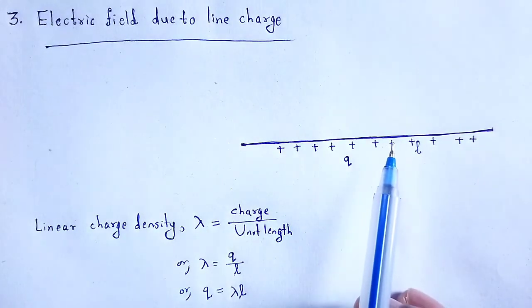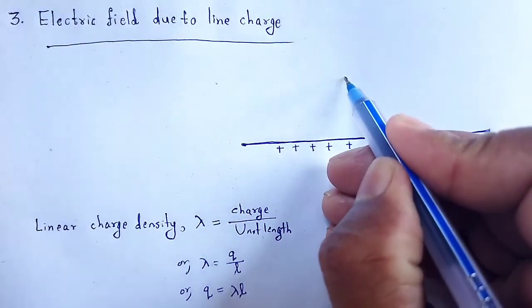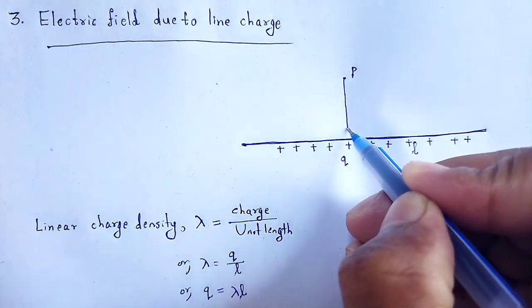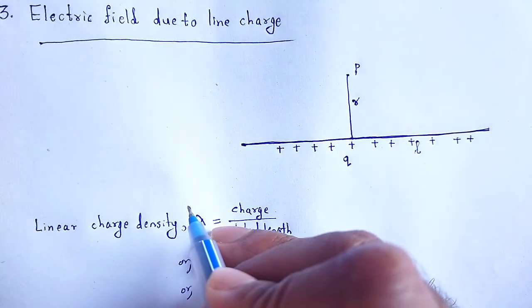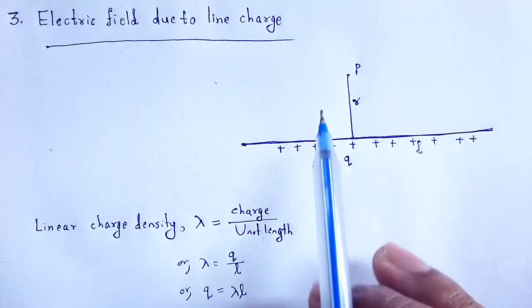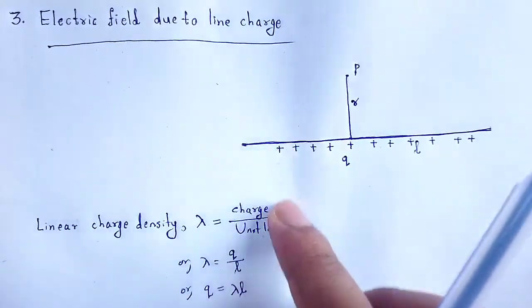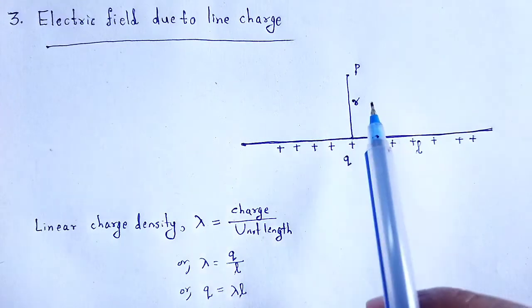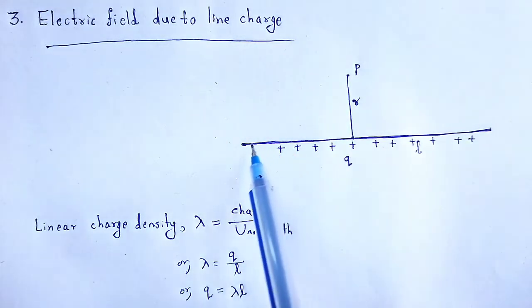Here we have to calculate the electric field intensity at a point. Let P be the point which is at a distance r from the line charge. In this case, the electric field lines will be perpendicular to the line charge and directed radially outwards. Let us calculate the electric field intensity at point P due to that line charge.